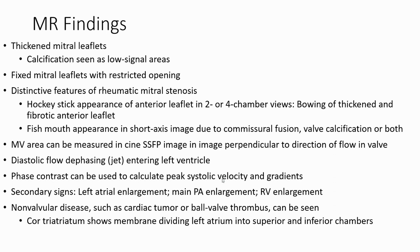The diastolic flow jet entering the left ventricle can be visualized. Fast contrast imaging can be used to calculate peak systolic velocity and gradient. MRI can also demonstrate left atrial enlargement, main pulmonary arterial enlargement, right ventricle enlargement. Differential structures such as cardiac tumors or thrombus can be seen. A cor triatriatum membrane dividing the left atrium into superior and inferior chambers can also be identified.